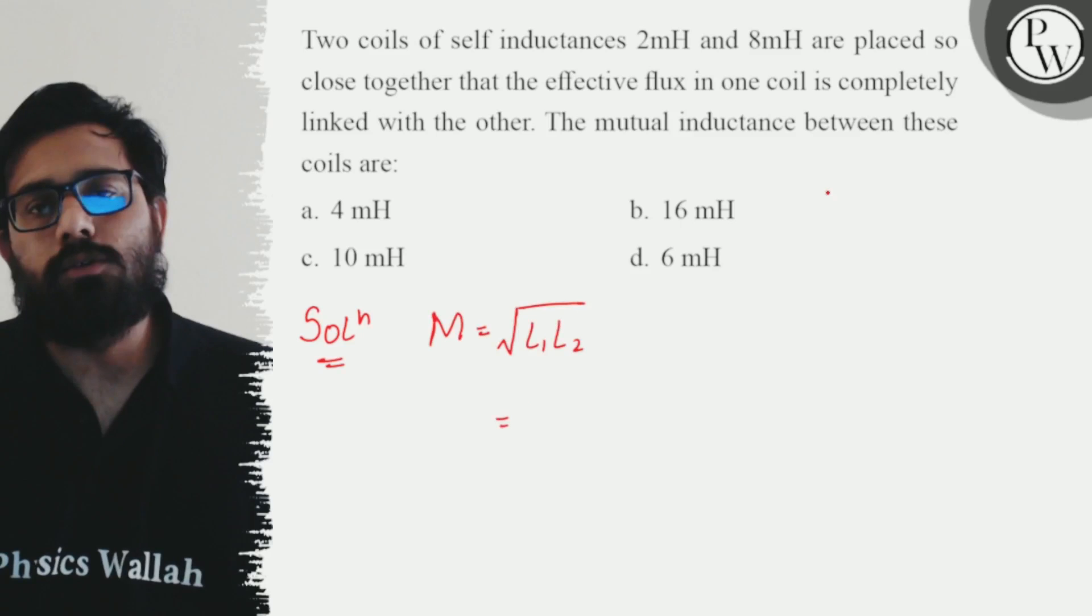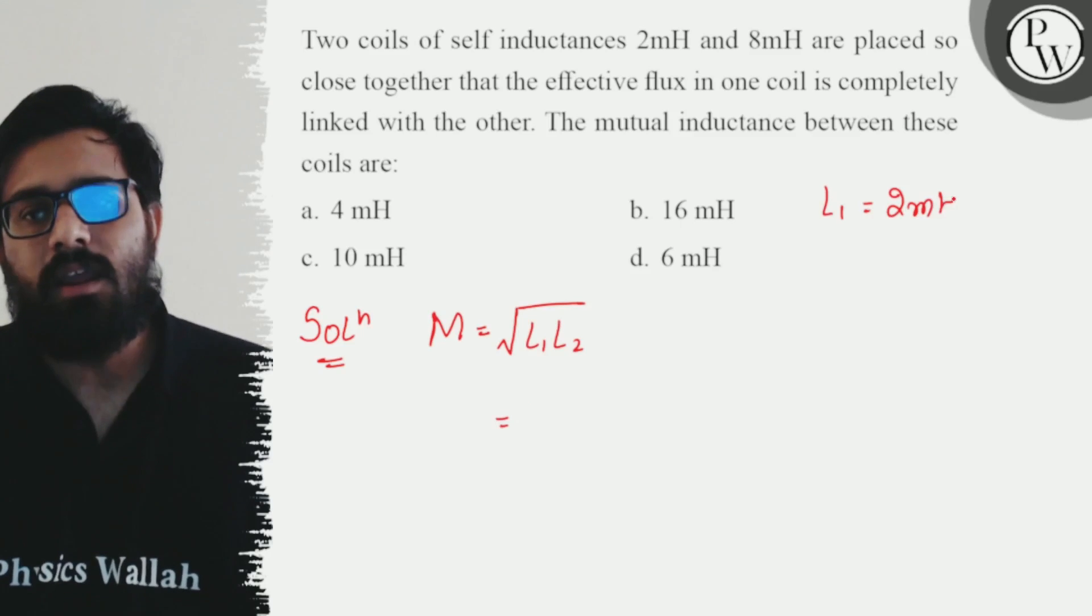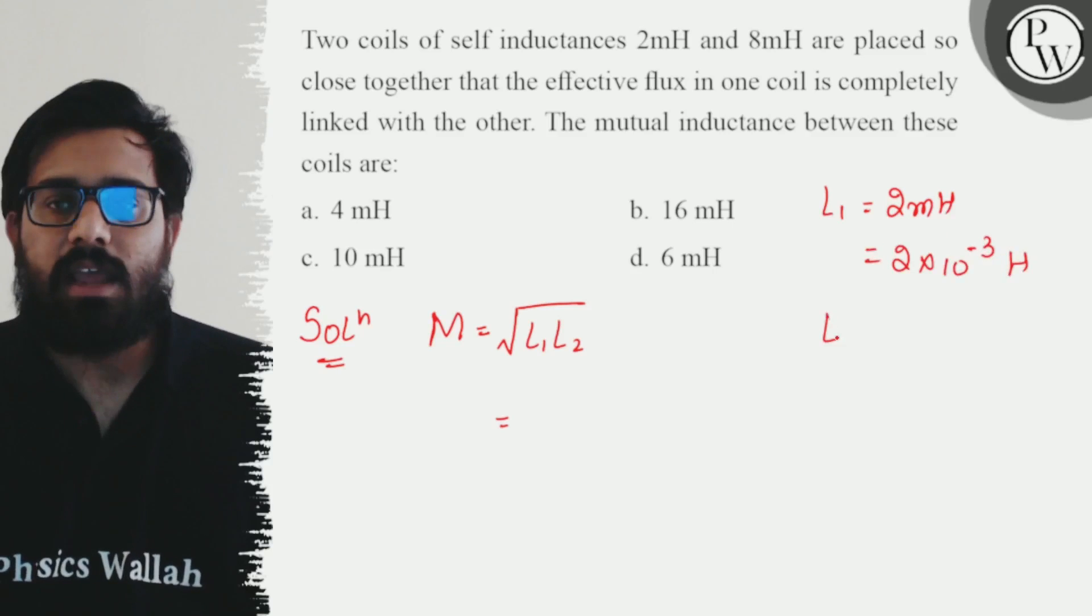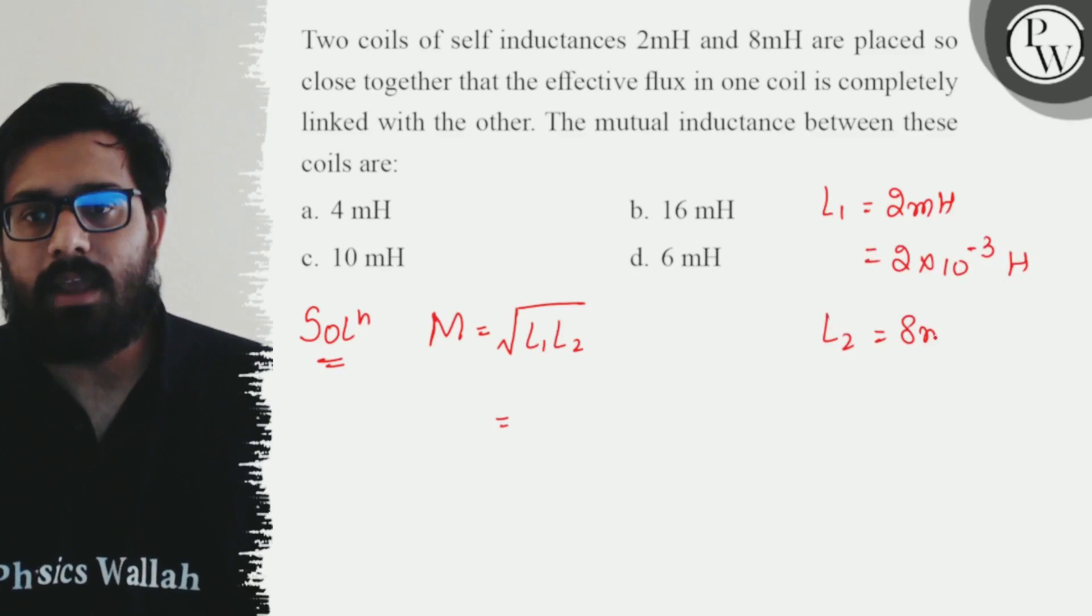In this question, we have L1 as 2 mH or we can say 2×10^-3 H. We have L2 as 8 mH or we can say 8×10^-3 H.